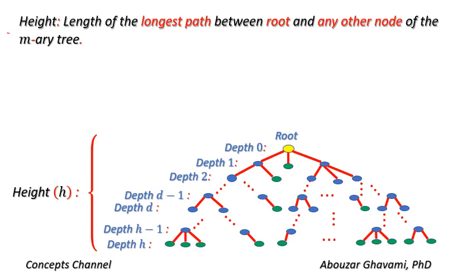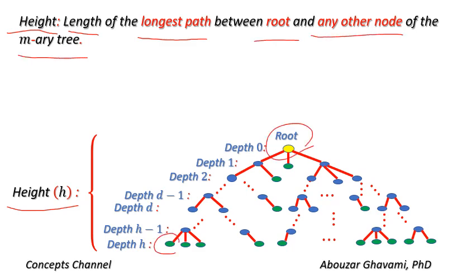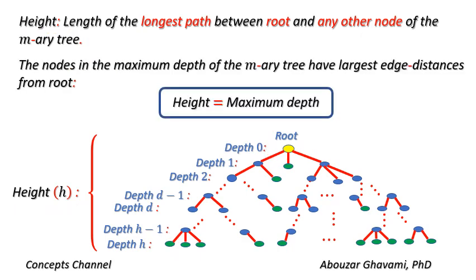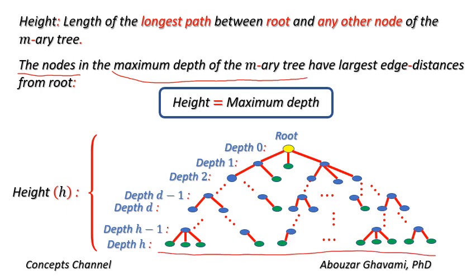The height of the m-ary tree is the length of the longest path between root and any other node of the m-ary tree. The nodes in the maximum depth of the m-ary tree have the largest edge distances from root. Thus, the height of the m-ary tree is equal to the maximum depth of the m-ary tree.